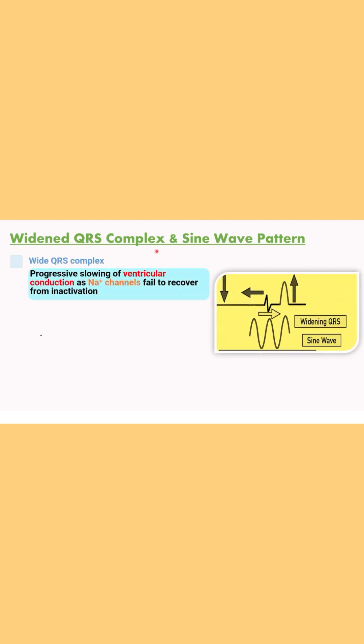And finally what happens in the severe hyperkalemia, there is widening of the QRS complex and sine wave pattern is seen in the ECG. This occurs due to progressive slowing of the ventricular conduction as sodium channels fail to recover from the inactivation and moreover QRS complex slowly merges with the T wave which forms the sine wave pattern.